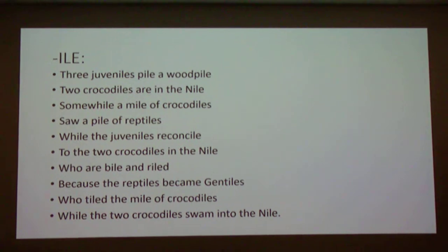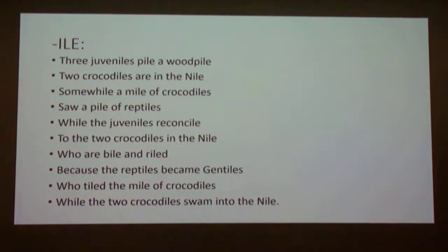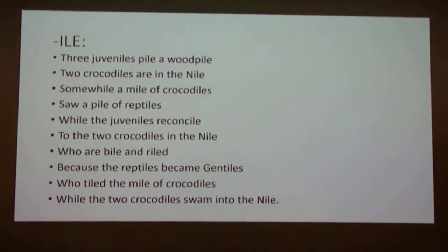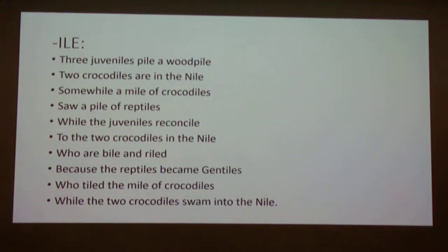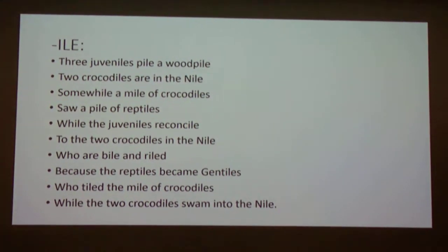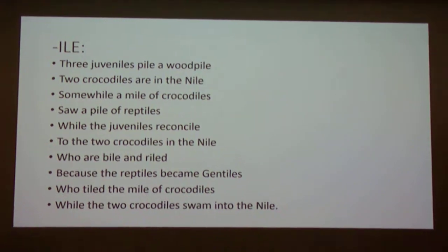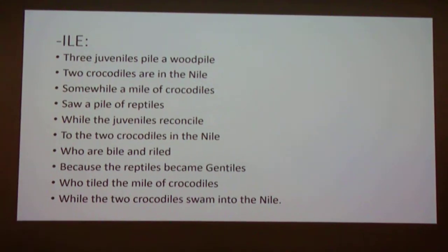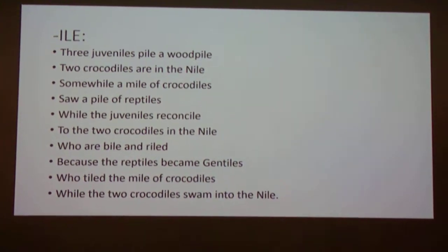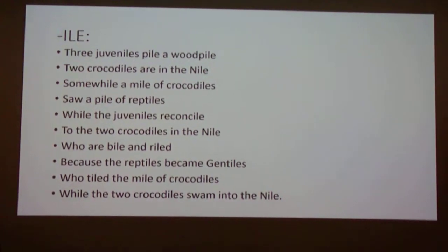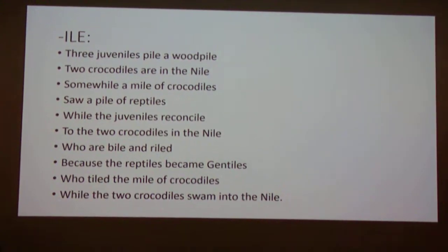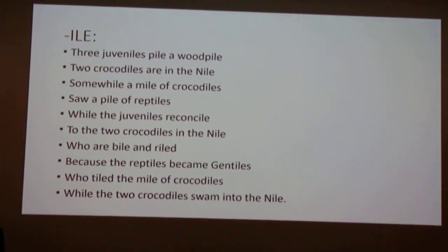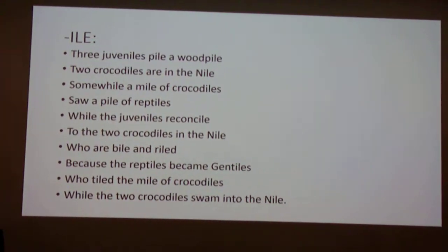Then we have I-L-E. Three juveniles pile the woodpile. Two crocodiles are in the Nile. Some while, a mile of crocodiles saw a pile of reptiles, while the juveniles reconcile to the two crocodiles in the Nile, who are vile and riled because the reptiles became Gentiles, who tiled the mile of crocodiles, while the two crocodiles swam into the Nile.